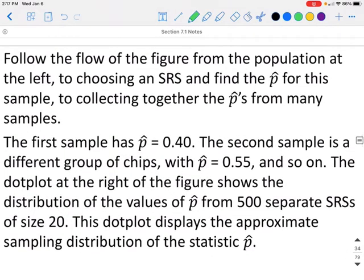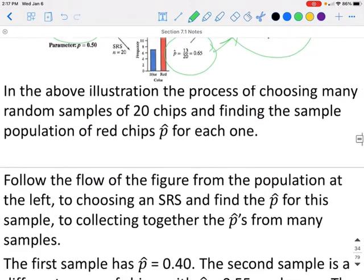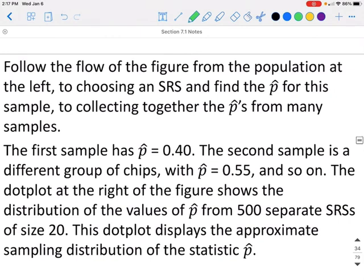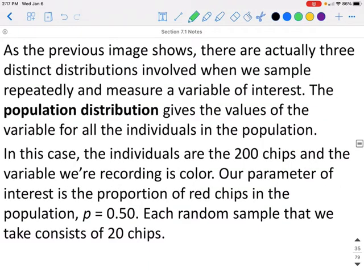The first sample had a p̂ of 40%, the second one was 55%, and the third one was 65%. The dot plot on the right then shows all of those 500 separate samples and what those p̂ values were for each one of those.